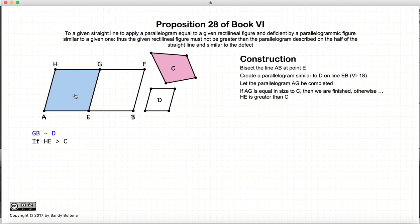Finish the construction so that we have AG is equal to GB. Now, if HE is greater than C, we can continue. Otherwise, if HE is equal to C, then we're finished. So let's assume that HE is actually greater than C. So GB is also greater than C since HE was greater than C.